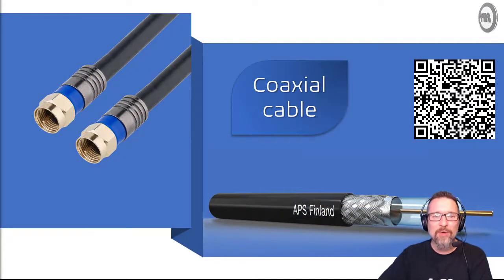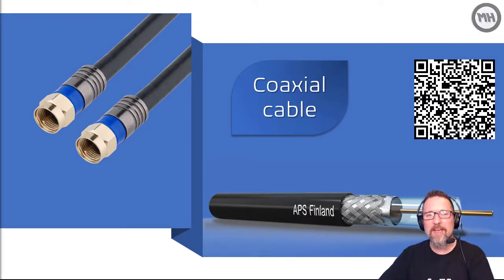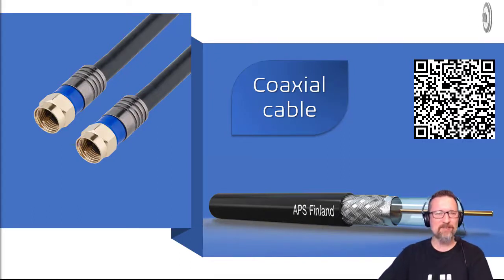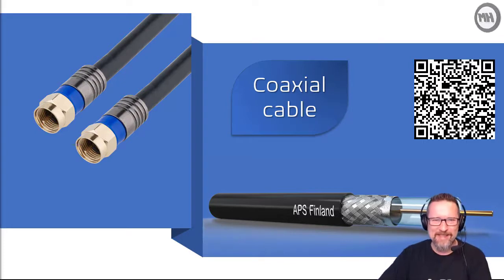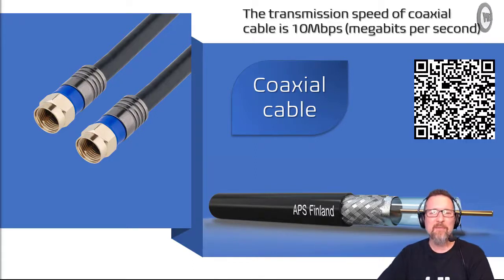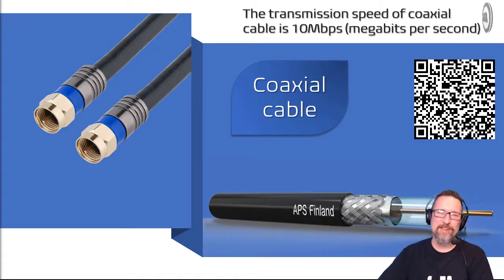Here we have a coaxial cable. The coaxial cable is used a lot with media — televisions, that sort of stuff. The transmission speed of a coaxial cable is about 10 megabits per second, and that's pretty much all you need to know about it.